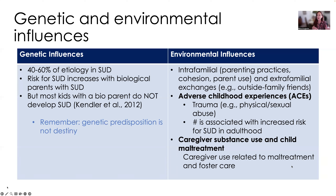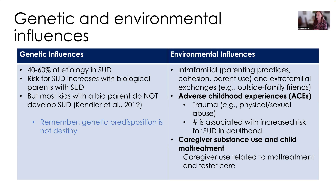I want to talk a little about genetics and environmental influences. Studies show that genetics account for about 40 to 60% of the etiology or cause of substance use disorder. Your risk for substance use disorder will increase with biological parents who've had substance use disorder — if you have one biological parent, you have some risk; if you have two, you have a much greater risk. That's a genetic predisposition. But most children with a biological parent who has substance use disorder won't get substance use disorder — biology is not destiny here.